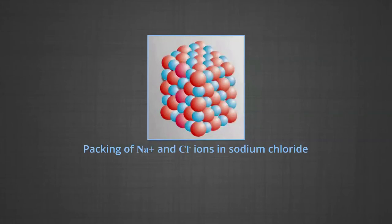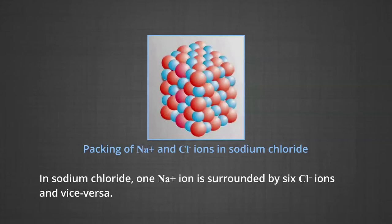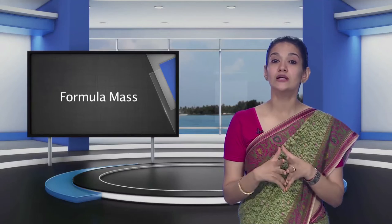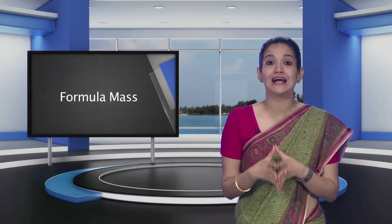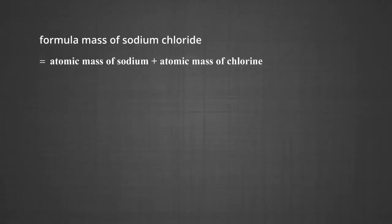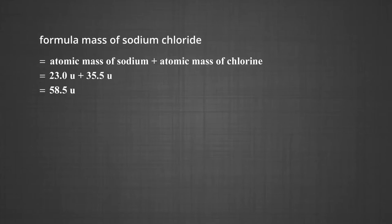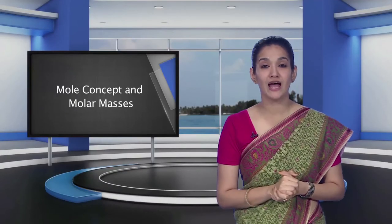It may be noted that in sodium chloride, one Na⁺ ion is surrounded by six chloride ions and vice versa. The formula such as NaCl is used to calculate the formula mass instead of molecular mass, as in the solid state sodium chloride does not exist as a single entity. Thus, formula mass of sodium chloride = atomic mass of sodium + atomic mass of chlorine = 23u + 35.5u = 58.5u.